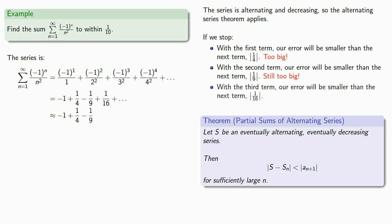and so our error using these first three terms is going to be smaller than the next term, one sixteenth. Since we wanted to find the series sum to within one tenth, the first three terms will give us the desired accuracy.